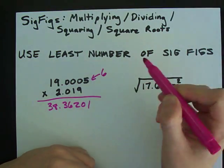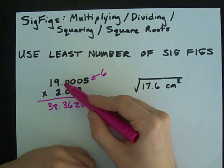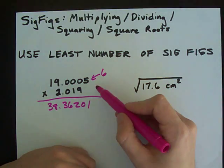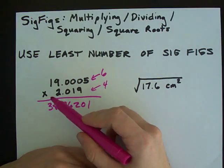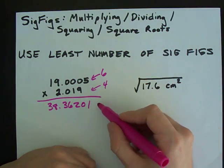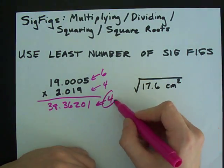This has six significant figures: one, two, three, four, five, six. This has four significant figures: one, two, three, four. So your final answer can only have four.